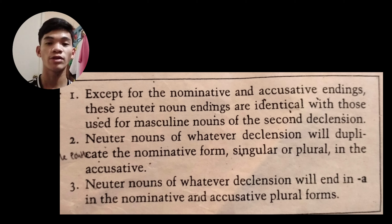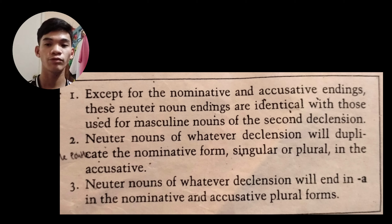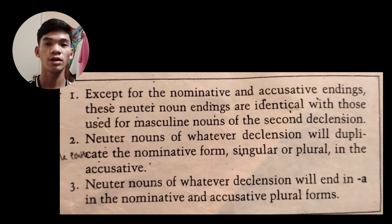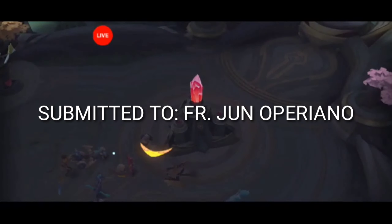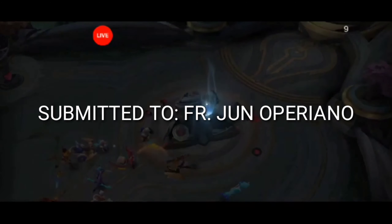Let us take note of three things. First, except for the nominative and accusative endings, these neuter noun endings are identical with those used for masculine nouns of the second declension. Second, neuter nouns of whatever declension will duplicate the nominative form, singular or plural, in the accusative. Third, neuter nouns of whatever declension will end in -a in the nominative and accusative plural forms.